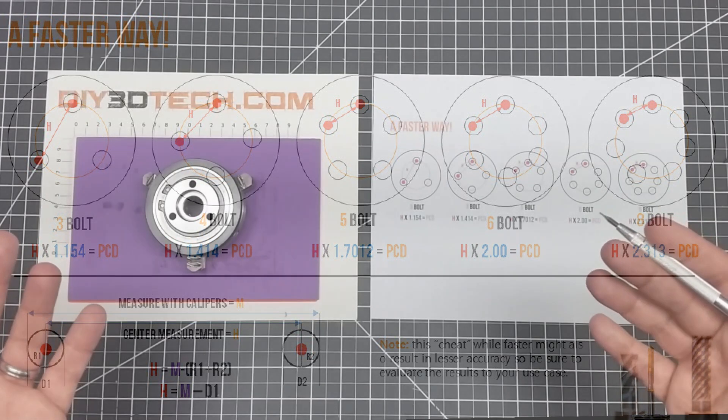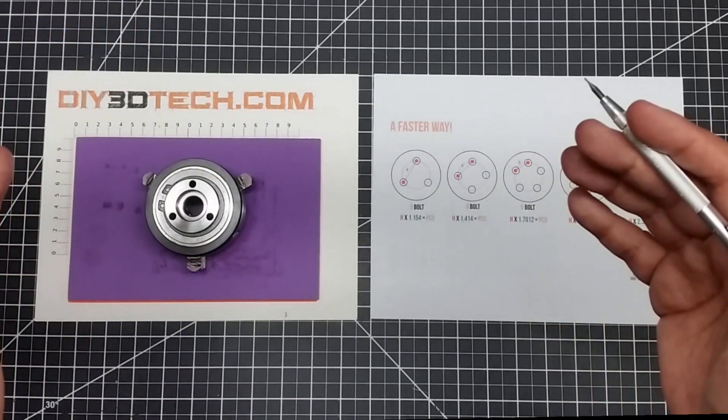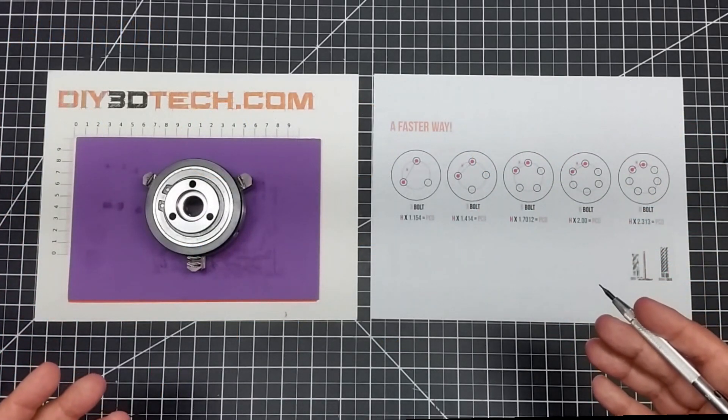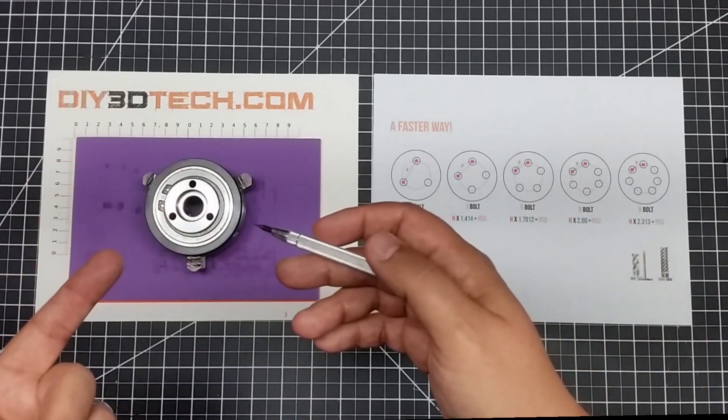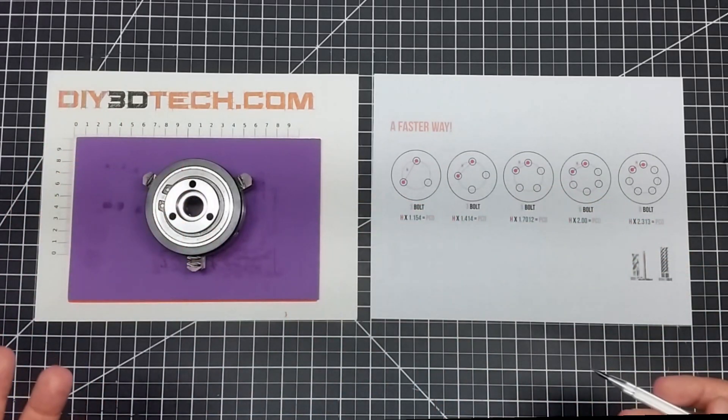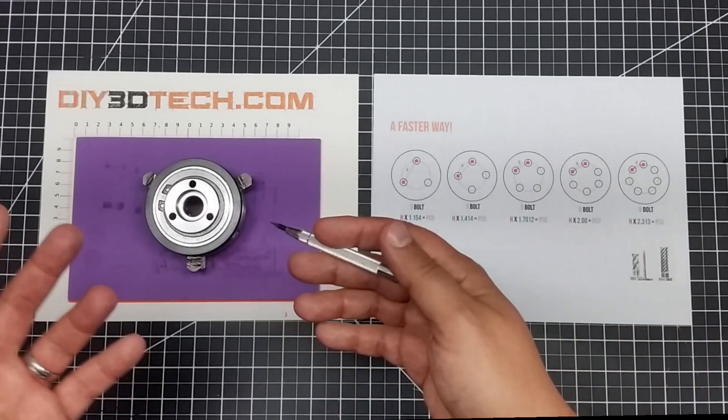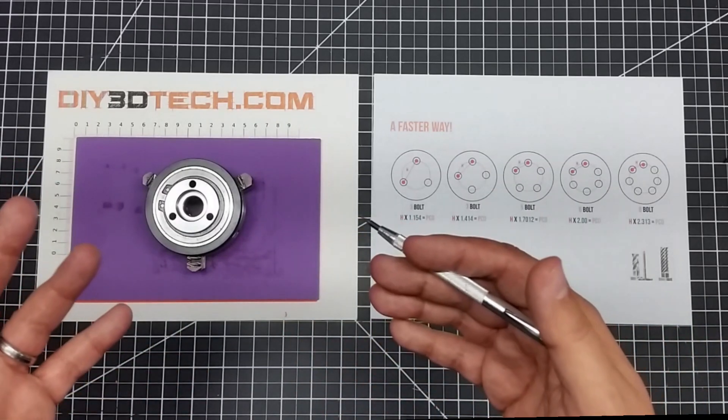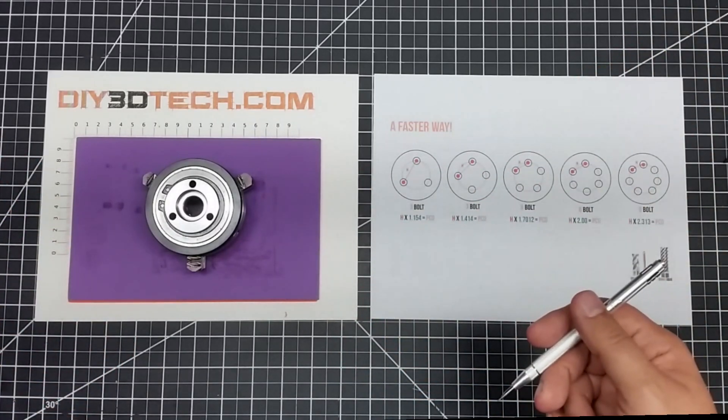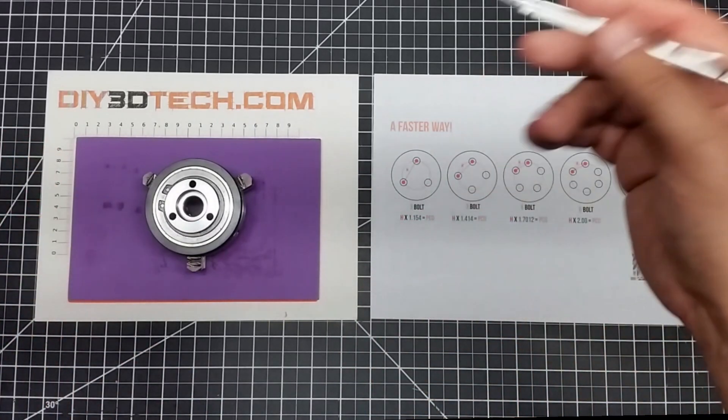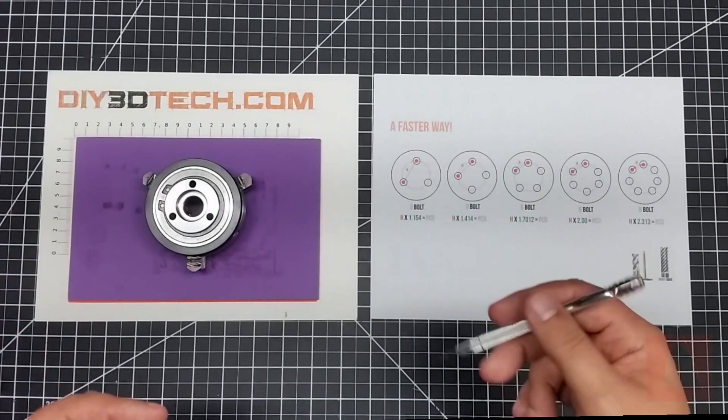Hopefully in this episode, I helped dispel some myths around PCD and helped you guys out there. If you have a similar problem like I've been facing with this chuck, you now have an answer to it. I can go out there and calculate it. Hopefully you enjoyed it. If you have other maker math questions, hit me up in the comments. If you've got a better way to do this, also hit me up in the comments.